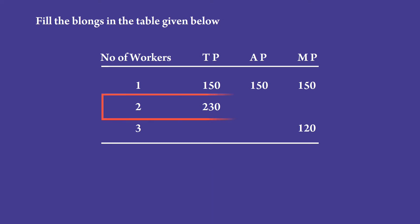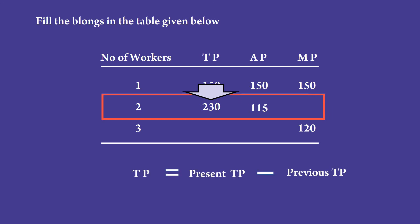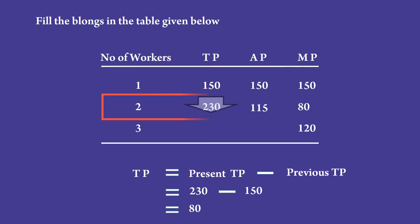We shall go to the next row. Here, total product is given. We have to find the average product and the marginal product. Total product divided by number of workers gives us the average product: 230 divided by 2 is 115. Average product is 115. To calculate marginal product, use the formula present total product minus previous total product. Present total product is 230, previous total product is 150, so 230 minus 150 is 80. Marginal product is 80.